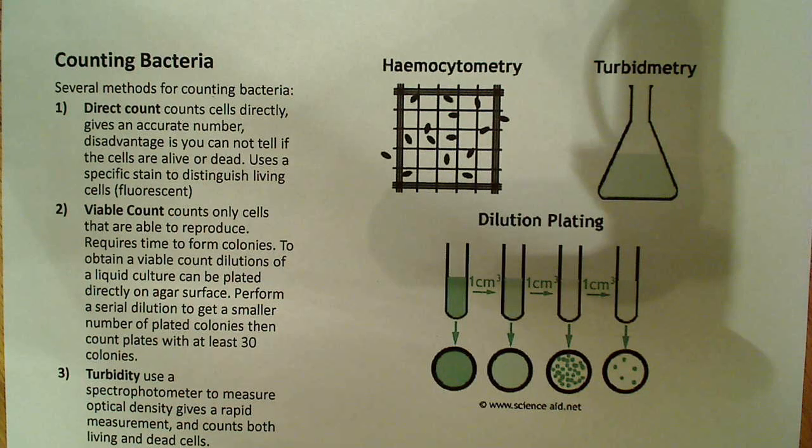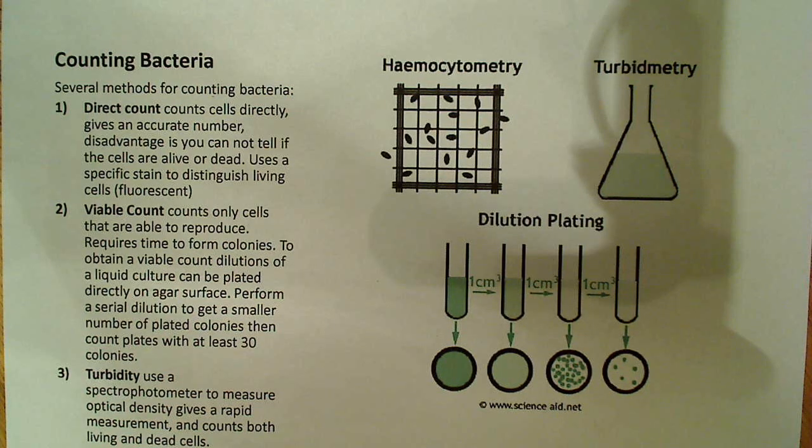You may need to perform a viable count. Viable count means that you're only going to count cells that are able to reproduce - only cells that are viable. It requires time to form the colonies, because you have to have some culture time, usually at least a day, probably more, and usually at specific incubation temperatures.